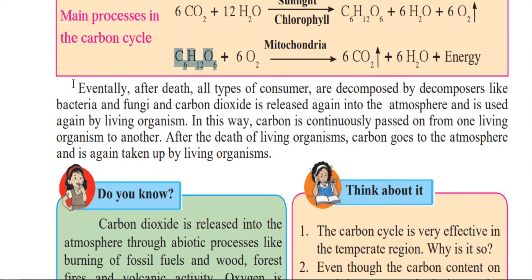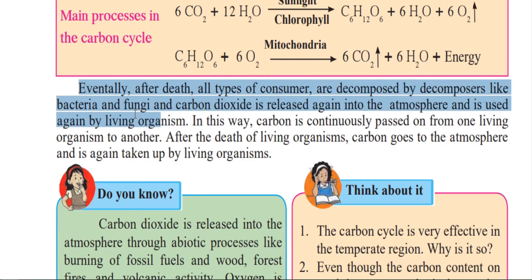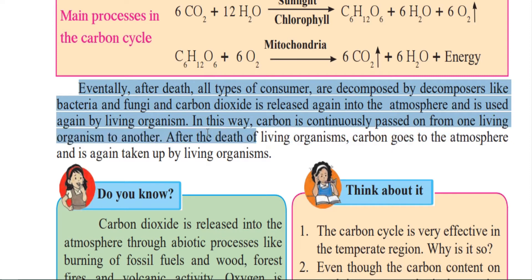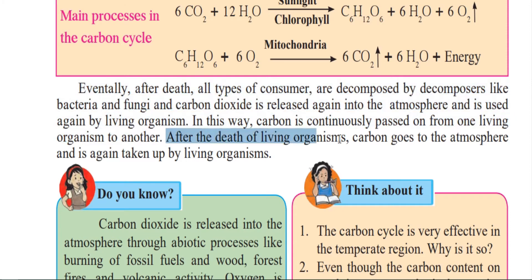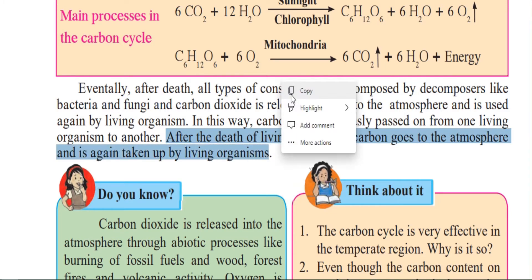After death, all types of consumers are decomposed by decomposers like bacteria and fungi, and carbon dioxide is released again into the atmosphere and used again by living organisms. In this way, carbon is continuously passed from one living organism to the other — from herbivores to carnivores to decomposers and back into nature. After the death of living organisms, carbon goes to the atmosphere and is again taken by the living organisms, completing the cycle.